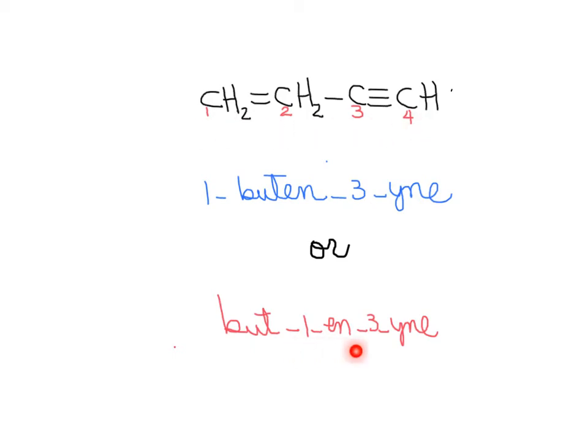That is but- for 4 carbons long, 1-en for the position of the double bond, and 3-yne for what is the position of the triple bond.